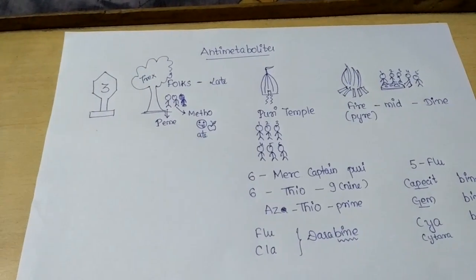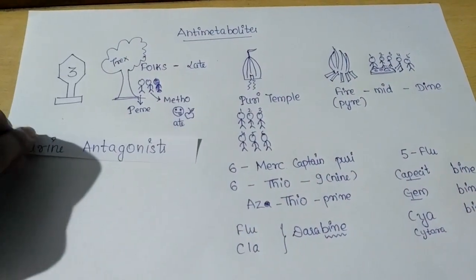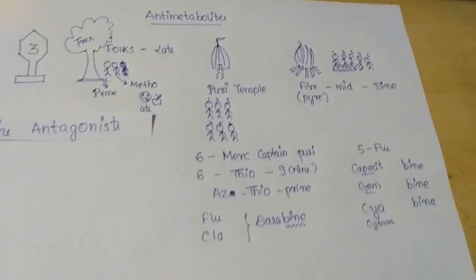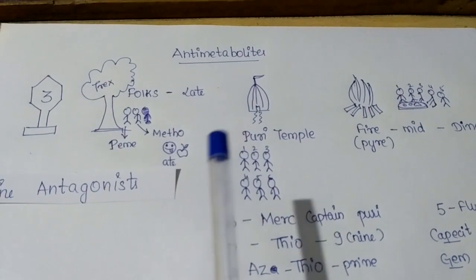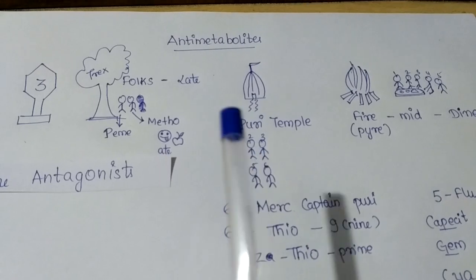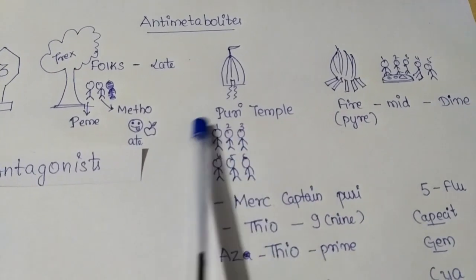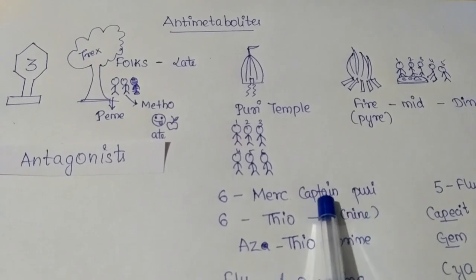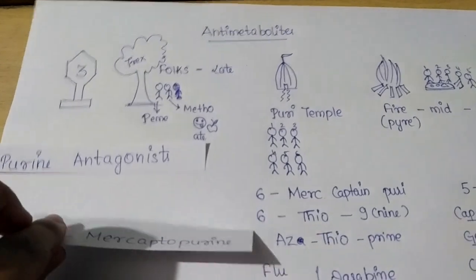Coming to the second subclass, the Puri temple gives us the purine antagonist subclass. There are six people in front of the Puri temple, which hints that the drugs will start from the number six. There are two groups of three people each, so two drugs start with six. The first is the captain guiding people to the Puri temple — he came in a Mercedes — so the first drug is 6-mercaptopurine.